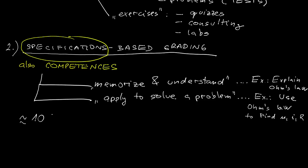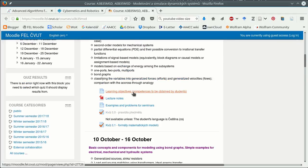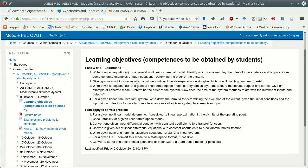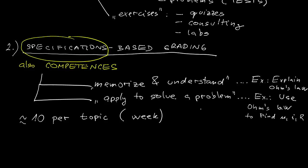We will typically have something like 10 competencies per topic, that means per week. Let's have a look at a particular set of competencies, perhaps from the first week. The main role of this list of competencies, fairly detailed list, is that it will assist you in actually learning. I strongly recommend having a look at it before you start watching the video or reading the book. However, it will also guide us in grading.